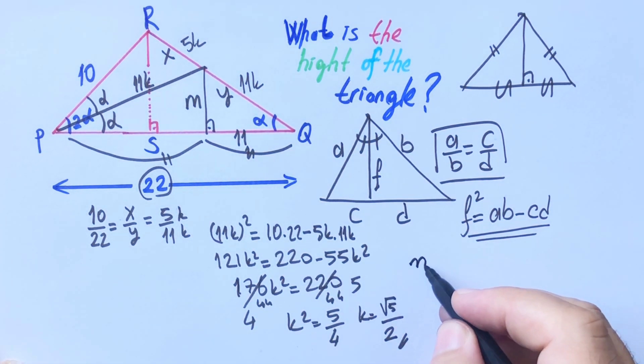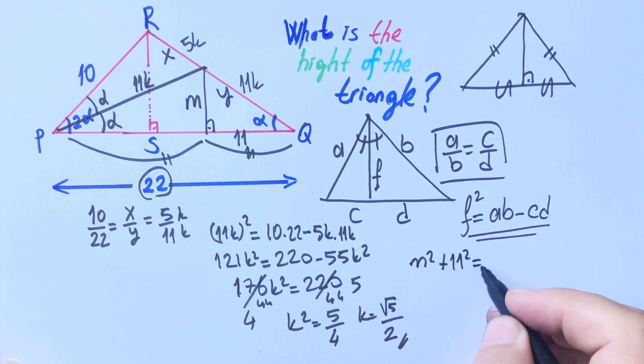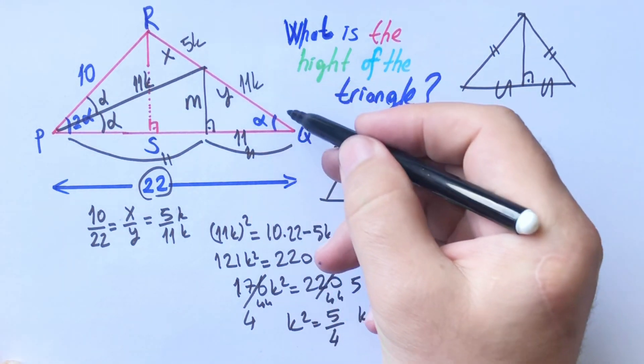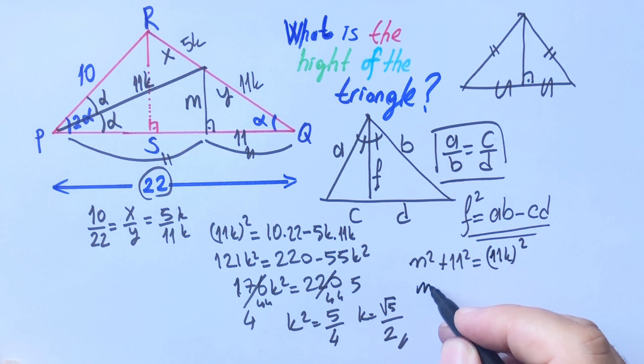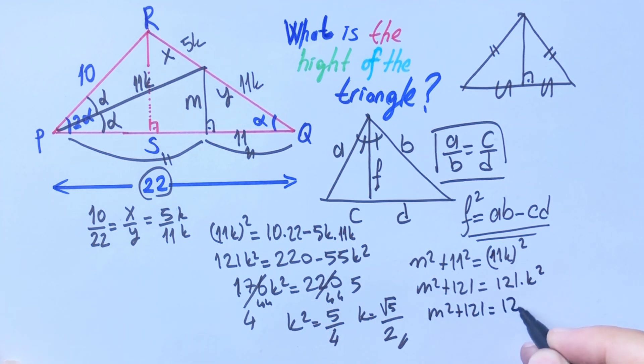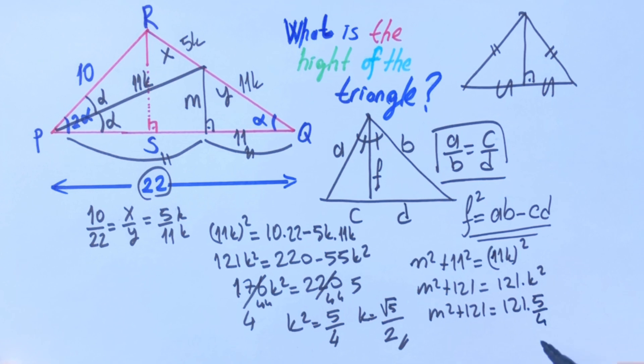If you apply Pythagorean theorem, M squared plus 11 squared equal 11 k squared. M squared plus 121 equal 121 k squared.